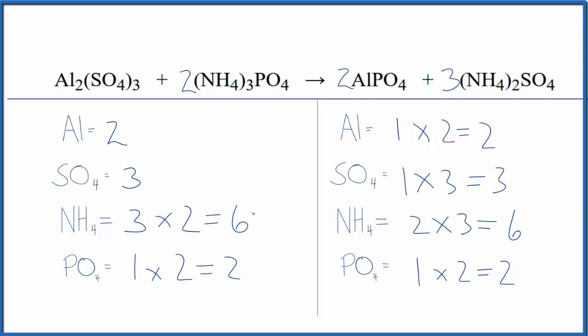So it's a lot faster, and that really matters on exams. You can do these much quicker than if you counted up the individual atoms. And you'll still get the same answer either way. This is Dr. B with the balanced equation for Al2SO43 plus NH43PO4. Thanks for watching.